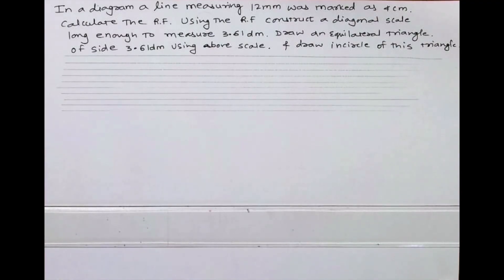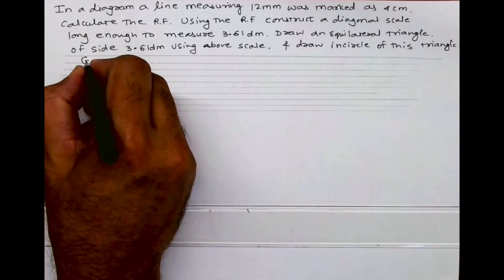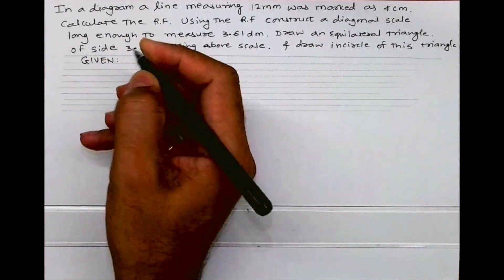Welcome to technical drawing. Today we'll see a diagonal scale problem where a line measuring 12mm was marked as 4 centimeter. Calculate the RF using the RF, construct a diagonal scale long enough to measure 3.61 decimeter, and we need to draw an equilateral triangle of side 3.61 decimeter with an inscribed circle.